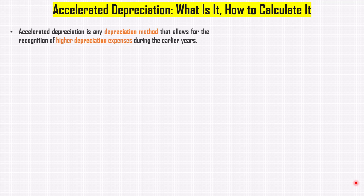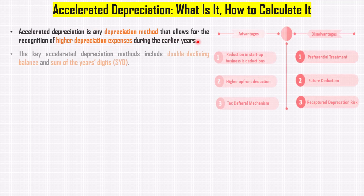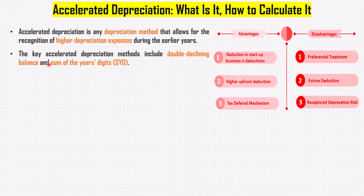Accelerated depreciation is any depreciation method that allows for the recognition of higher depreciation expenses during the earlier years. The key accelerated depreciation methods include double declining balance and sum of the year's digits, SYD.